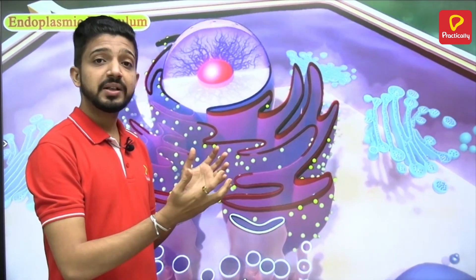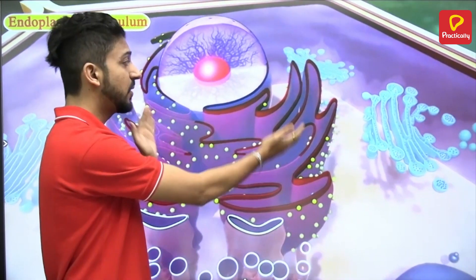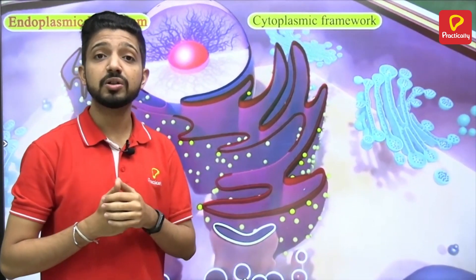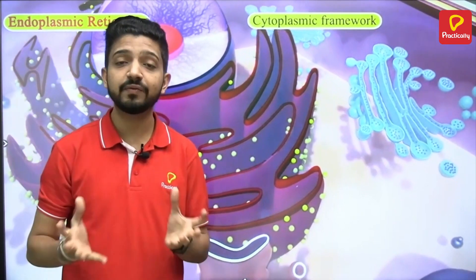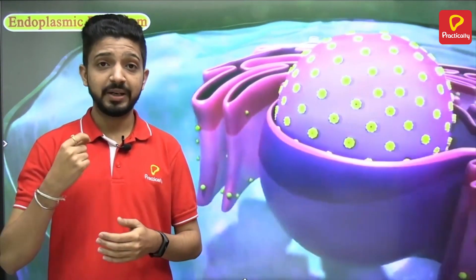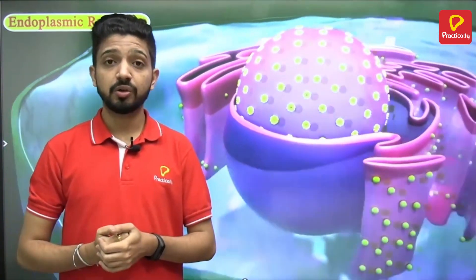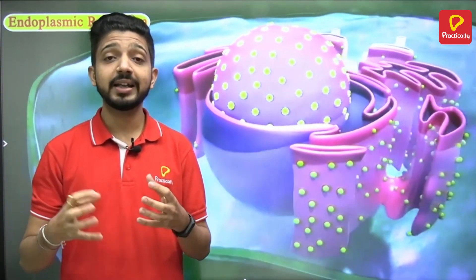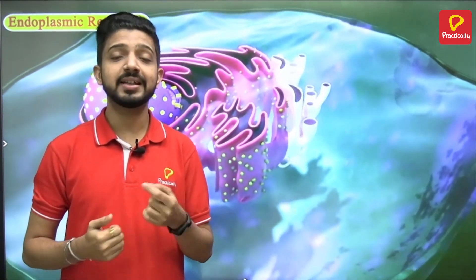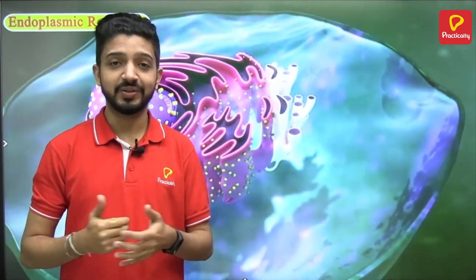Since the endoplasmic reticulum surrounds the nucleus, it helps enable easy exchange. It also provides a cytoplasmic framework for the cell and plays a very important role in providing mechanical support to the colloidal cytoplasm, and that's why it helps in giving strength to the cell.